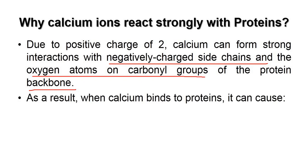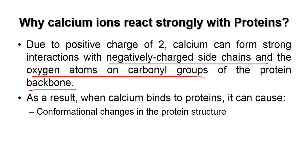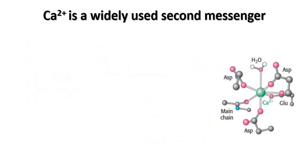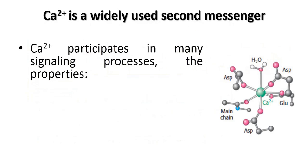As a result of binding to proteins, calcium can cause three different changes: first, a conformational change in the protein structure; second, once the protein structure changes, it can link different domains; and by linking different domains, it can stimulate the activity of the target protein. That is why calcium is such a powerful signal transduction molecule and a widely used second messenger that participates in many signaling processes.